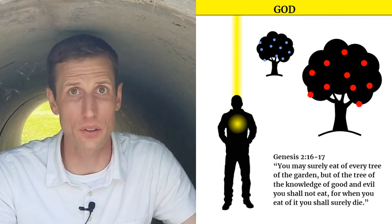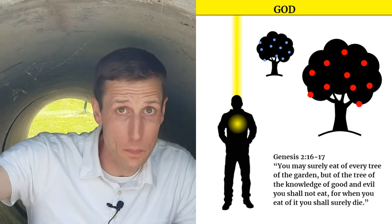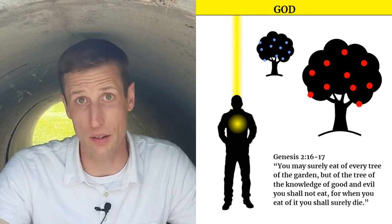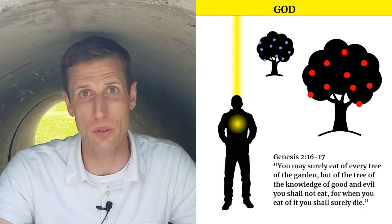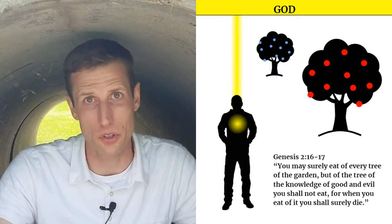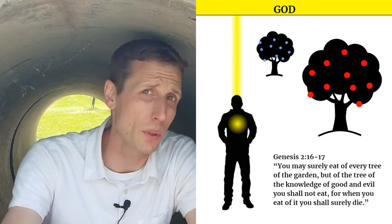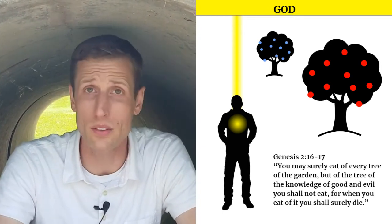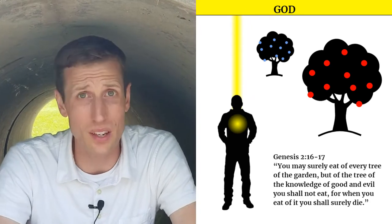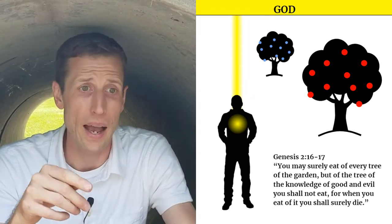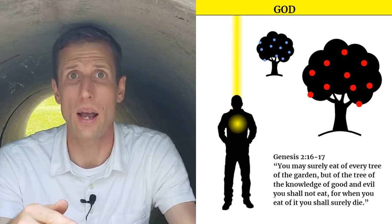It couldn't be any clearer. Adam, you see that tree over there? Don't eat the fruit from that tree. If you do, you'll die. So what did Adam do? He ate from the tree. Now, he wasn't alone. He did it along with his new wife, Eve. And let's be honest, you and I probably would have done the same thing. The consequences are clear. Adam and Eve would now have to die.